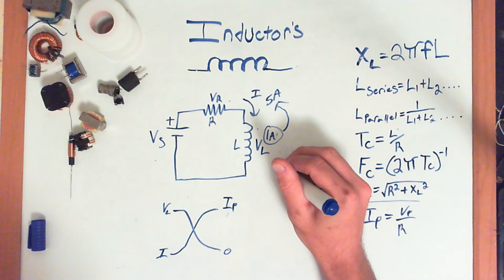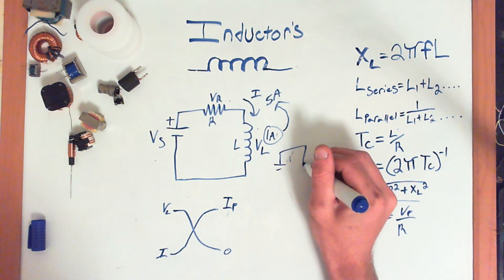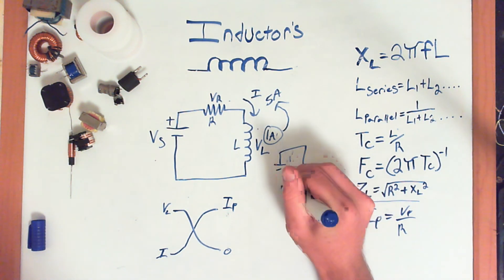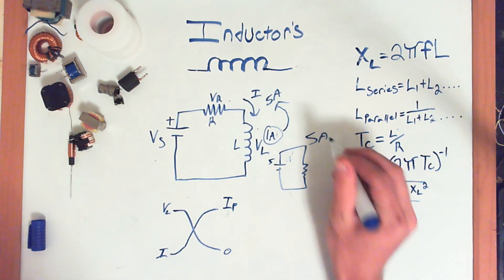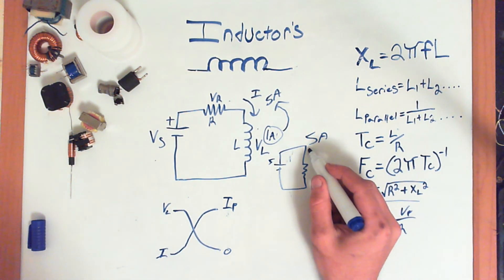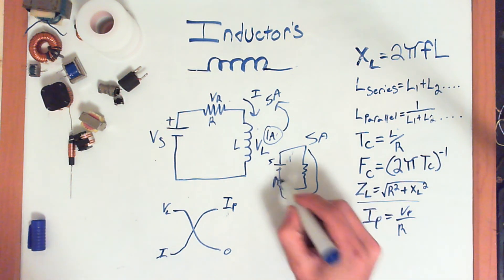Whereas, if we just had a simple battery and a resistor, and we hit five amps over here, this would automatically, the whole circuit would instantaneously be at five amps.